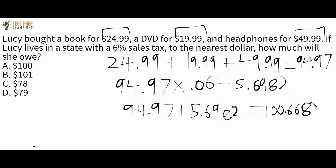Now we're at the rounding step: to the nearest dollar, how much will she owe? Look at the number to the right of the decimal — it's 6, which is greater than 5 — so round up and make this 101. To the nearest dollar, 100.6682 is $101. So the correct answer is B, $101.